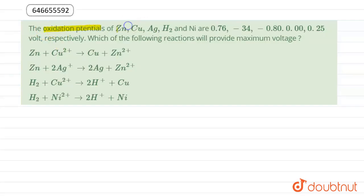the oxidation potential of zinc, copper, silver, hydrogen, and nickel are 0.76, -0.34, -0.80, 0.00, and 0.25 volts respectively.